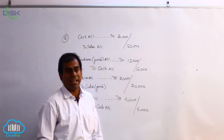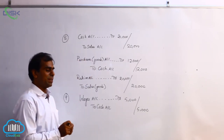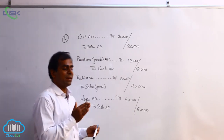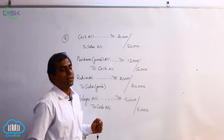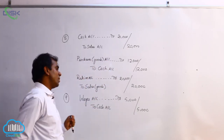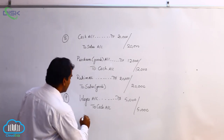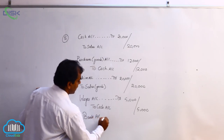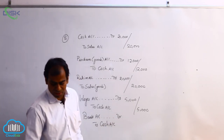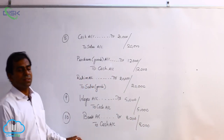The transaction on 10th is cash deposited in bank. Cash is deposited, so cash is a real account — cash is going out into the bank, so we apply the real account rule: credit what goes out for cash. Bank is a personal account and it is receiving cash from the business, so it becomes the receiver. The personal account rule says debit the receiver. The journal entry is: Bank Account Dr to Cash Account, 8,000. Narration: Being cash deposited into bank.